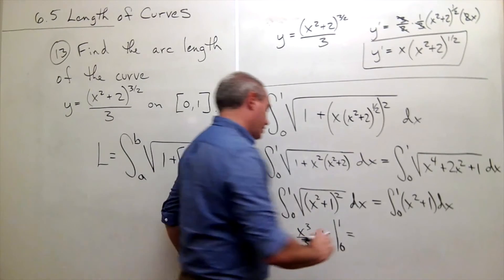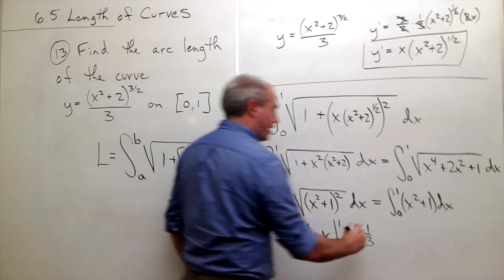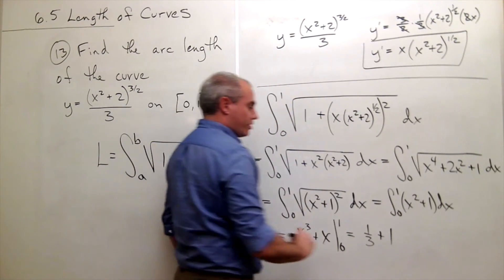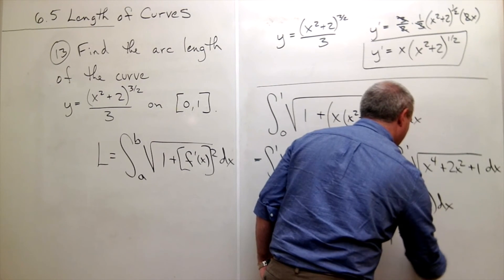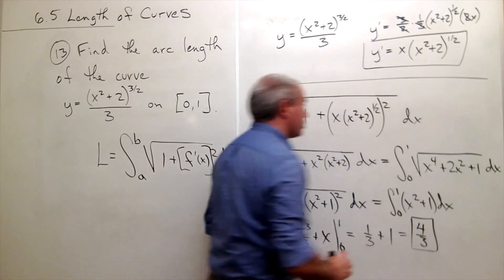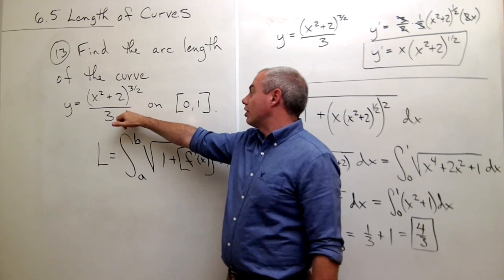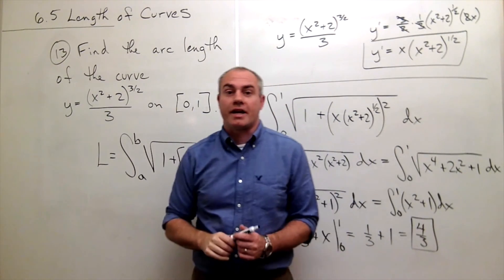We'll plug things in, and I get 1 third. I plug 1 in for x, and I get plus 1. I plug zeros in, and I get zeros. And so I'm just left with 4 thirds. So 4 thirds is the arc length of this curve on the interval from x equals 0 to x equals 1.